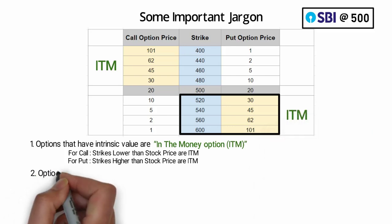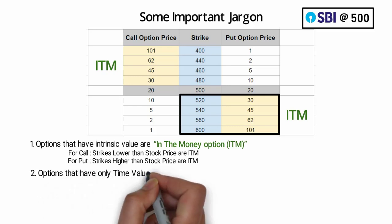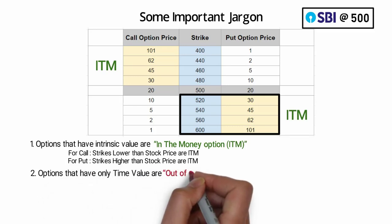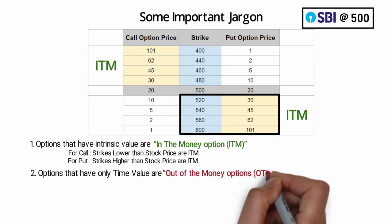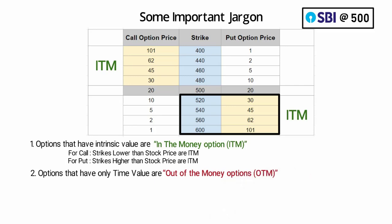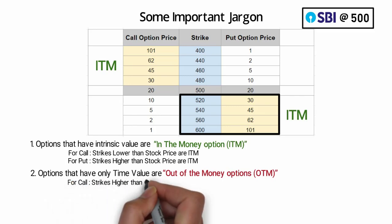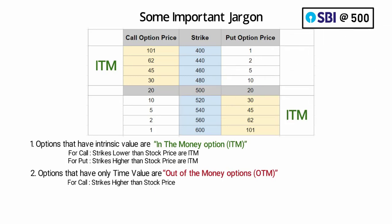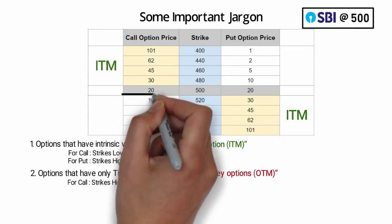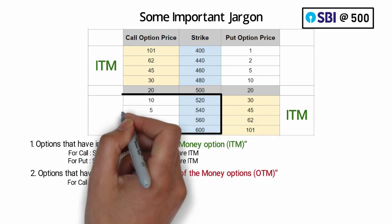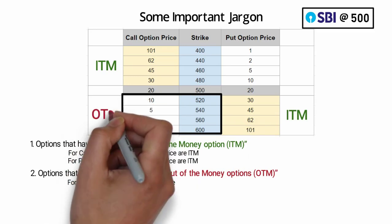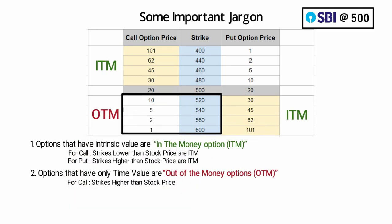Number two: options that have only time value are called out-of-the-money options, or OTM. These options have no intrinsic value. For call options, these are the strikes higher than the stock price. For example, if SBI is trading at 500, the 520, 540, 560 are OTM options — they are worth nothing if SBI expires at 500, therefore they are out of the money.